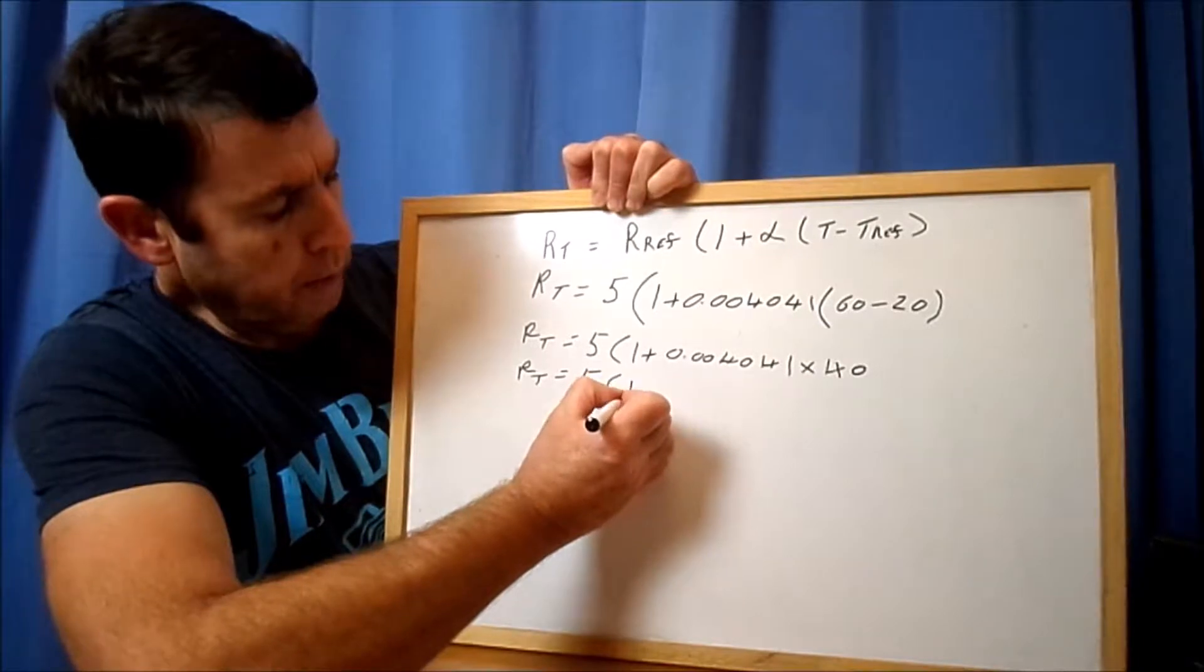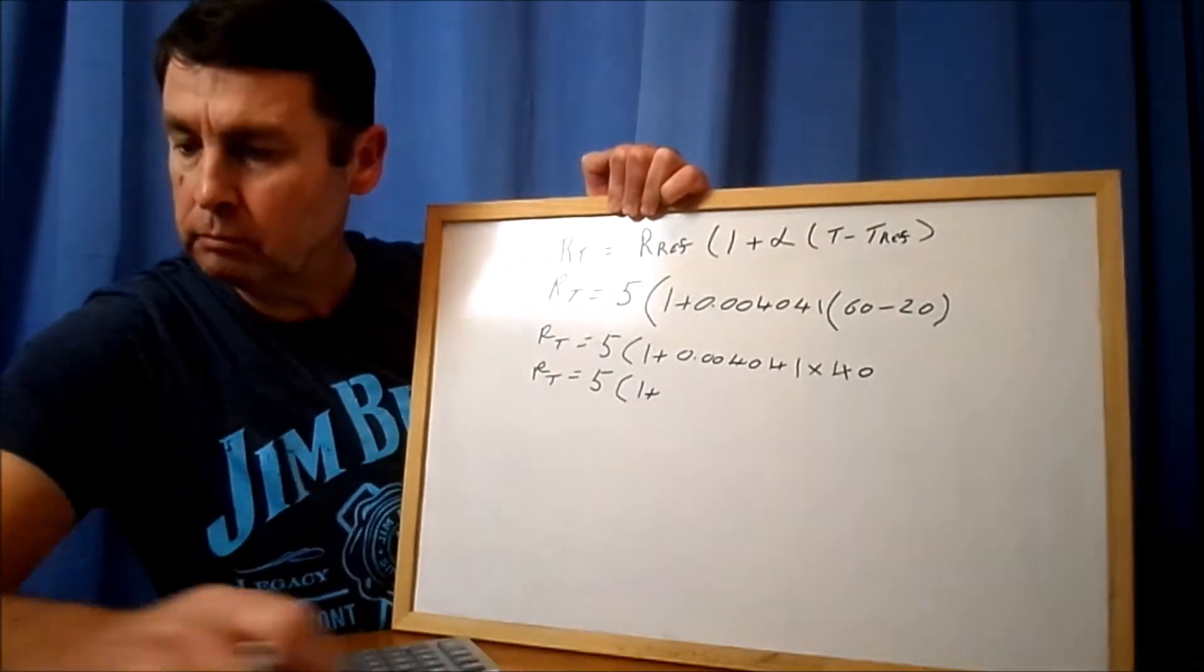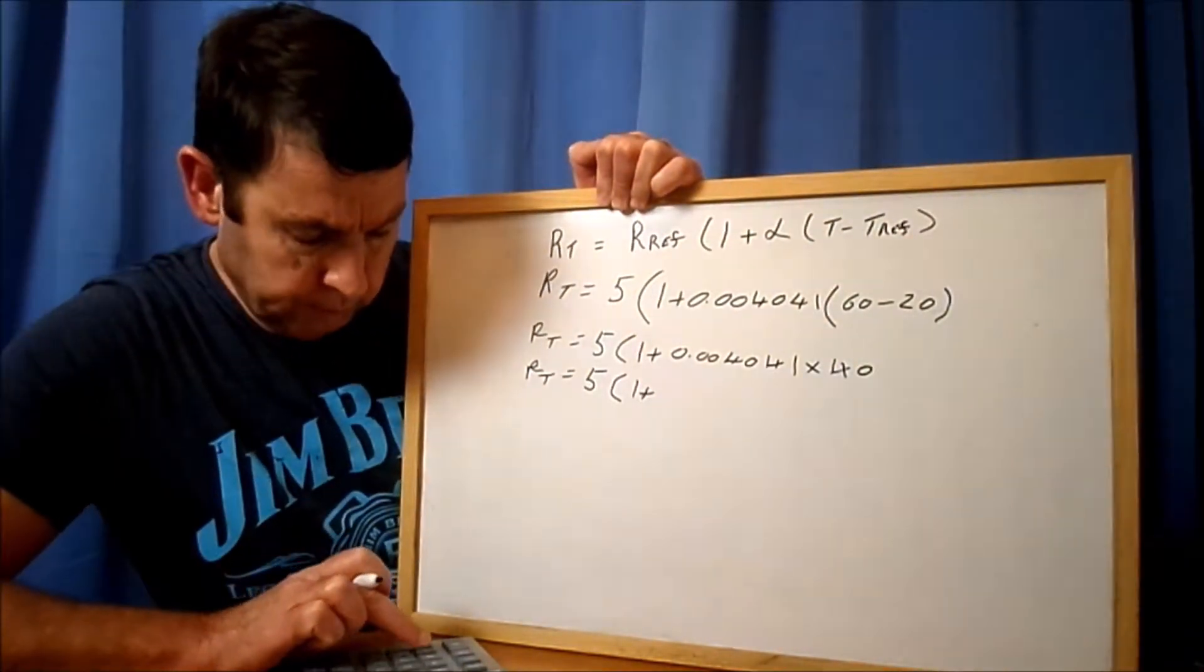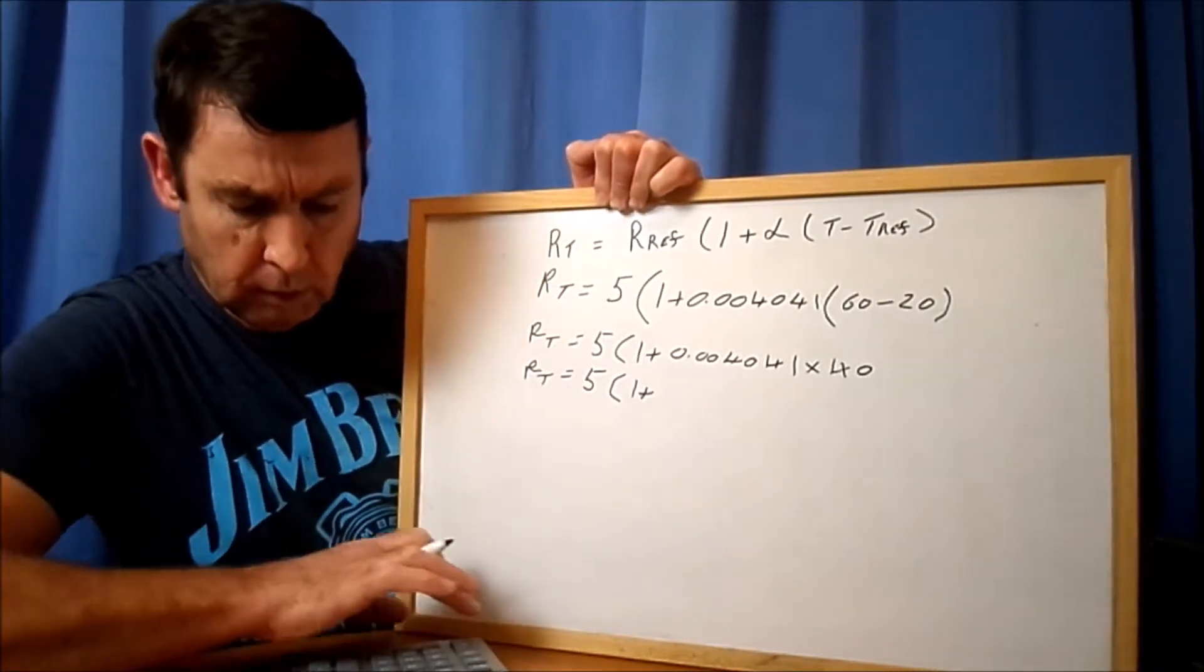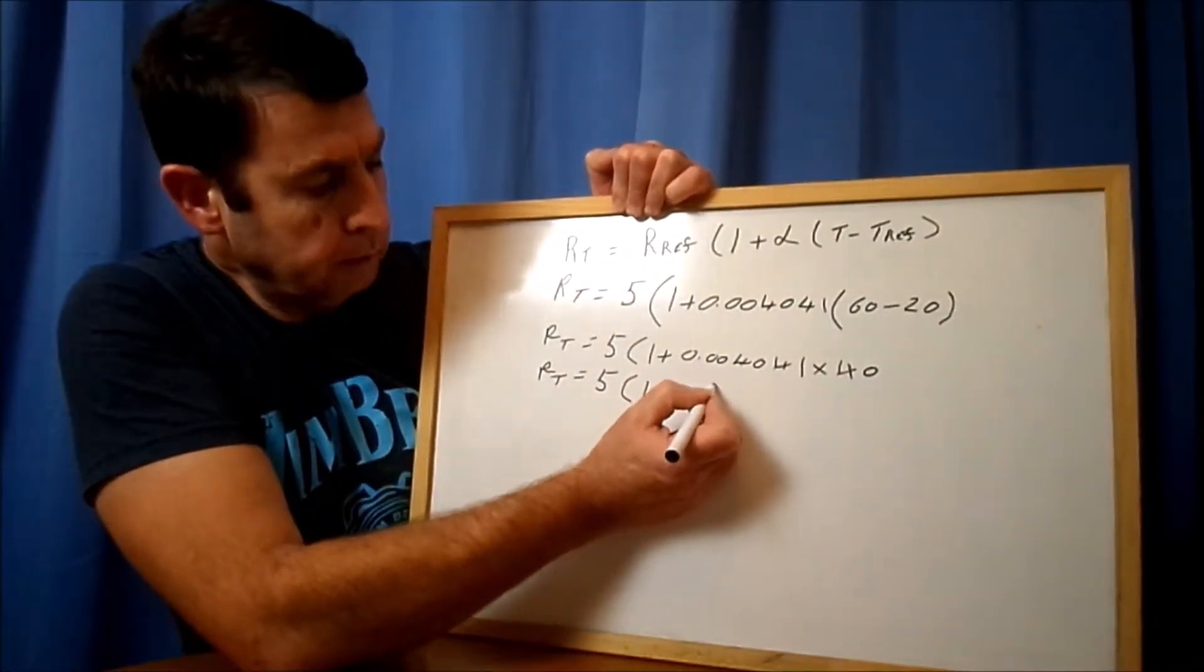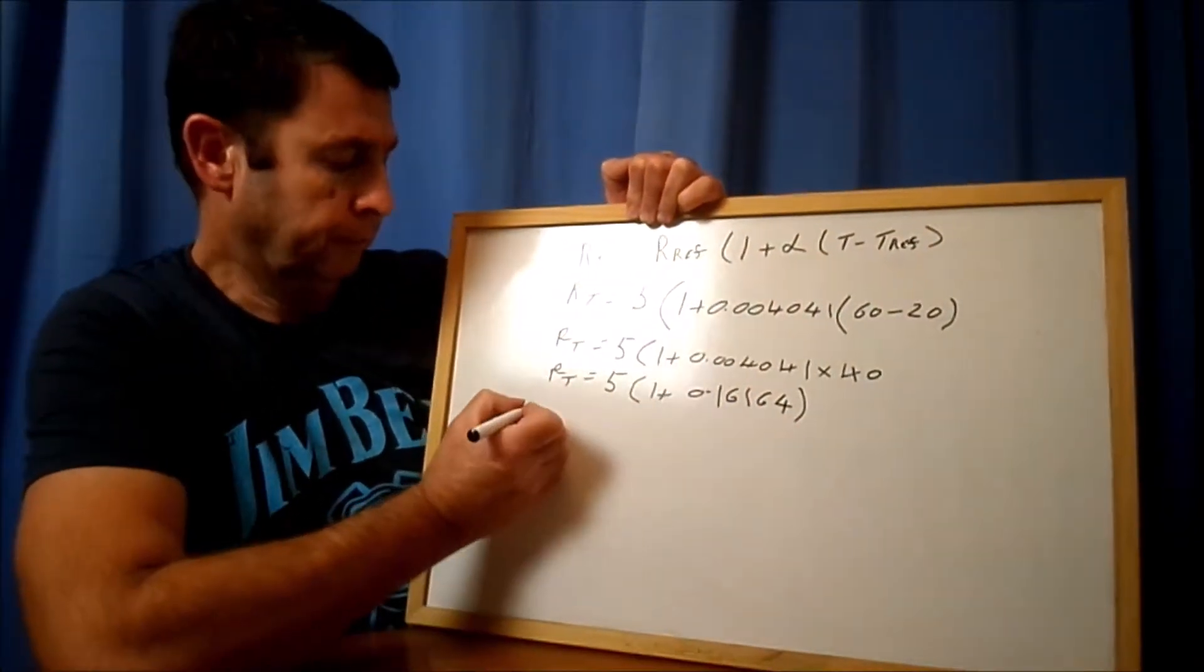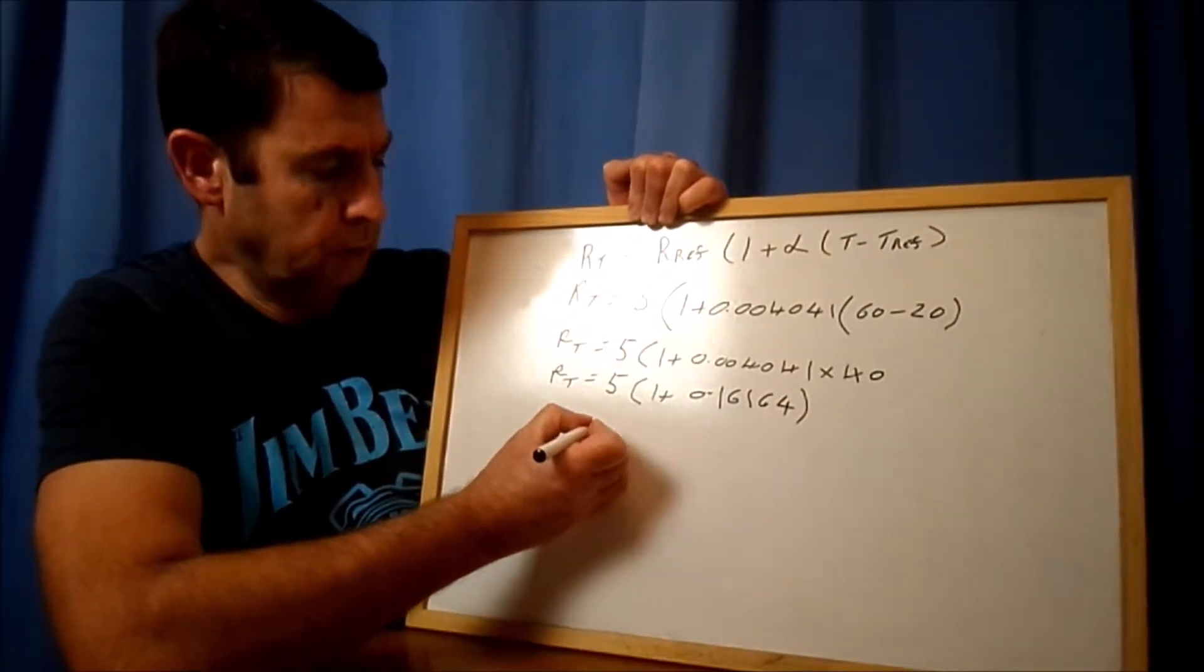Next step: RT is equal to 5 times 1 plus - let's now calculate that. 0.004041 times 40 equals 0.16164. Easy peasy so far.